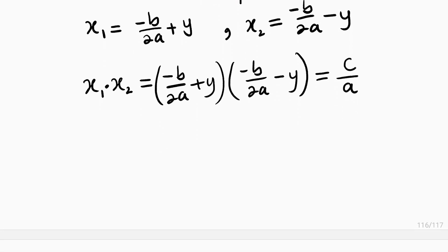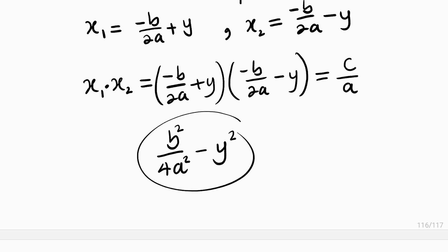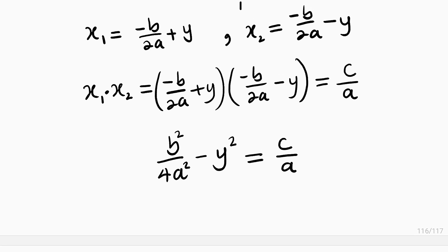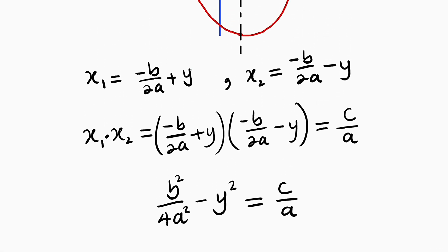You take the first term — negative b divided by 2a — and square it, which gives b squared divided by 4a squared. Then you subtract the second term y squared. This expansion must be equal to c divided by a. Our main goal here is to solve for y, then plug it back into the two equations to obtain our required roots.